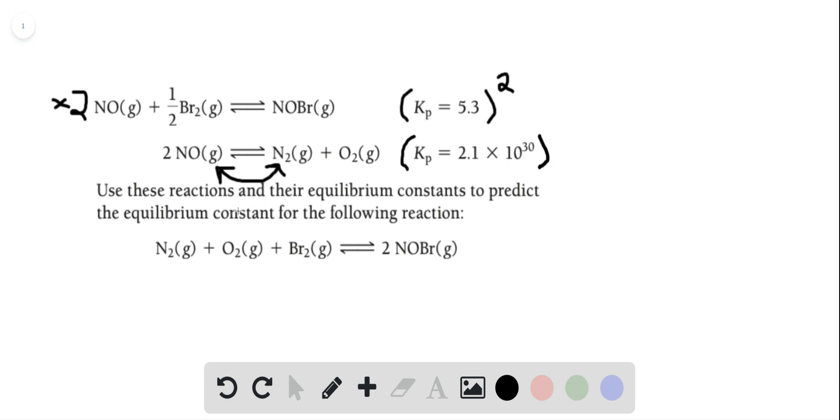For this equation, we're flipping it. So the reactants become products and the products become reactants. That's flipping it upside down, which is the same as inverting it or raising it to the negative first power.